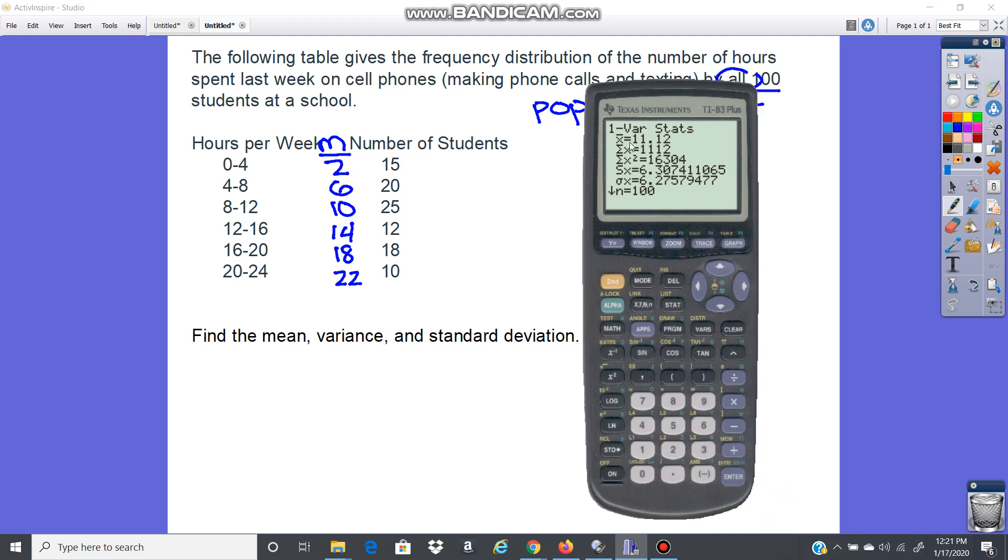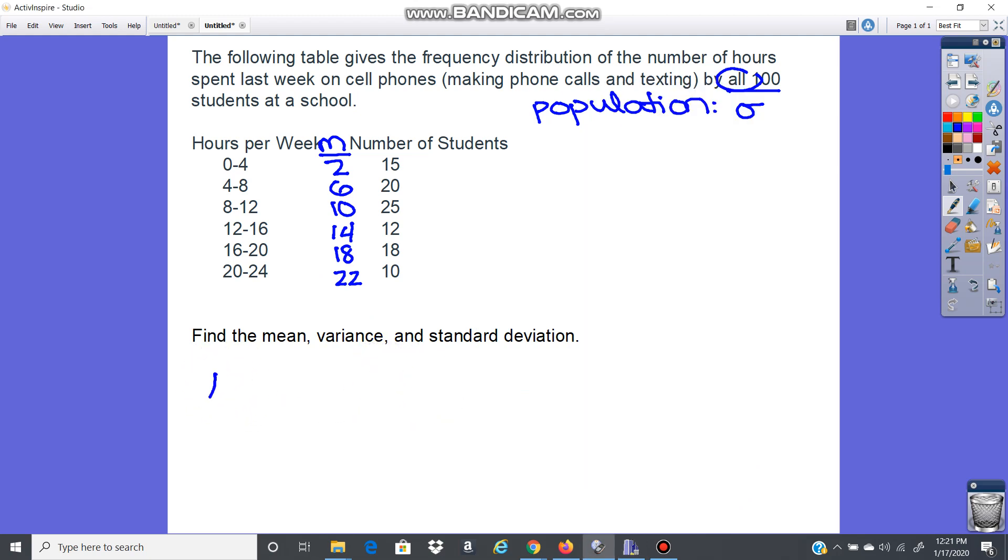So we have our mean, 11.12. If you watched the video previously, that is the correct mean. And then you have your two standard deviation calculations. So you have S of X, that's your sample. This is not a sample. This is a population. So we have 6.276. Okay, so we have our mean, which is mu, because we use Greek letters with population, 11.12. Then our standard deviation was 6.276.